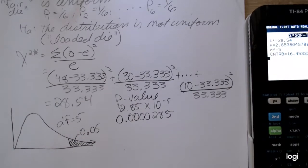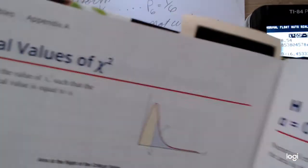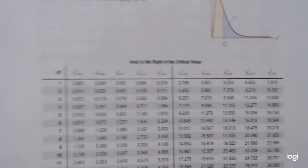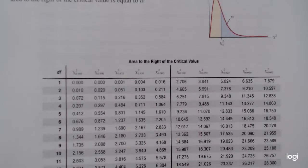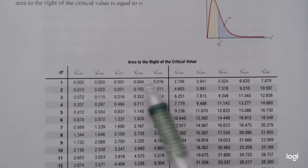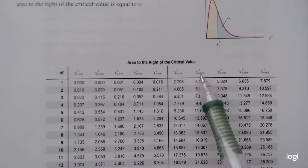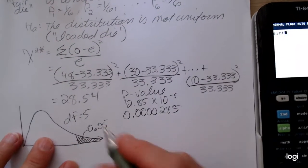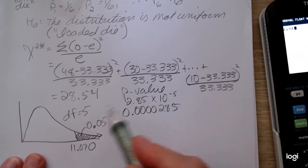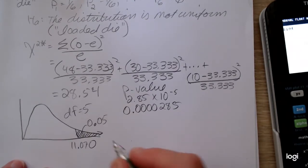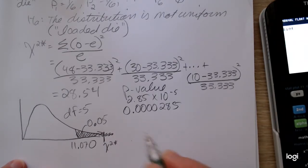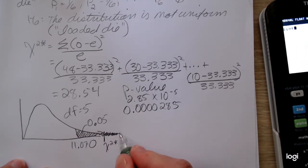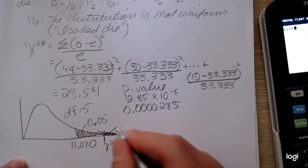Degrees of freedom is 5. Now going to the chi-square table for the text I'm currently using. The table reads from the critical value to positive infinity, and it's extremely difficult to read. So reading over to 0.05, and then down to 5 degrees of freedom. The critical value is 11.070. Looking at this test statistic of 28.54, that's going to be way out in the rejection region, further to the right. And the p-value represents the area further to the right of that test statistic.